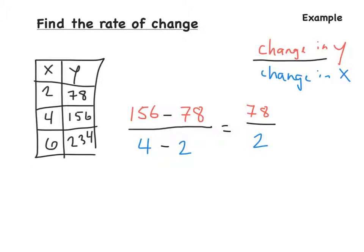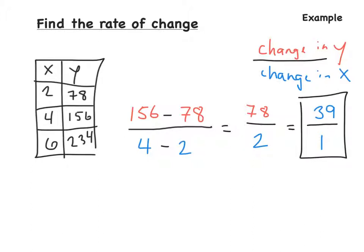We now have 78 over 2, or 78 divided by 2. If we simplify, we divide both 78 and 2 by 2, giving us 39 over 1. So the rate of change is 39.